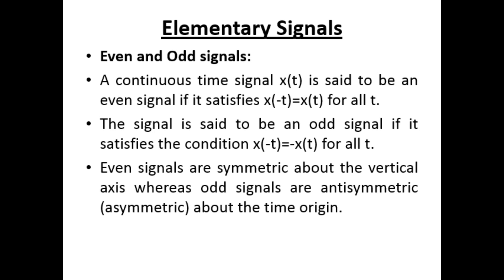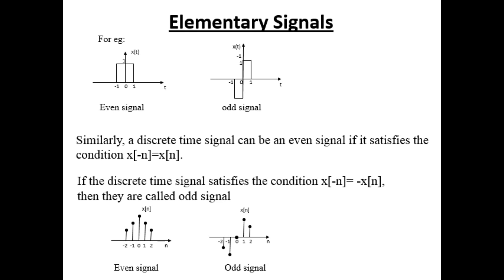Next is even and odd signals. A continuous time signal x(t) is said to be even if x(−t) = x(t) for all t. It is said to be odd if x(−t) = −x(t) for all t. Even signals are symmetric about the vertical axis, whereas odd signals are antisymmetric about the time origin. For discrete time, a signal is even if x(−n) = x(n), and odd if x(−n) = −x(n).